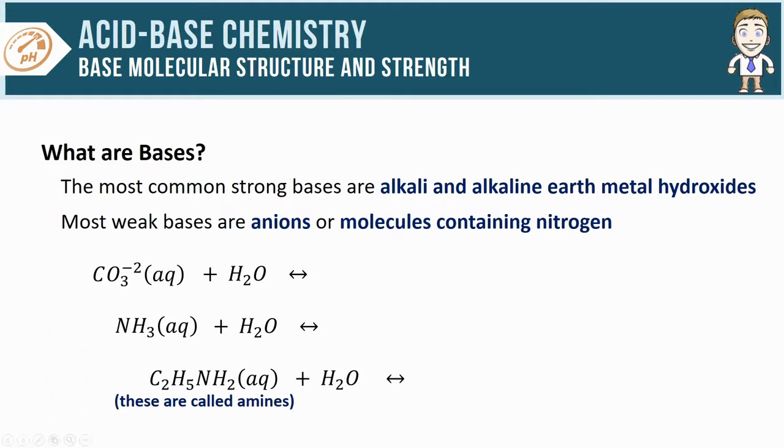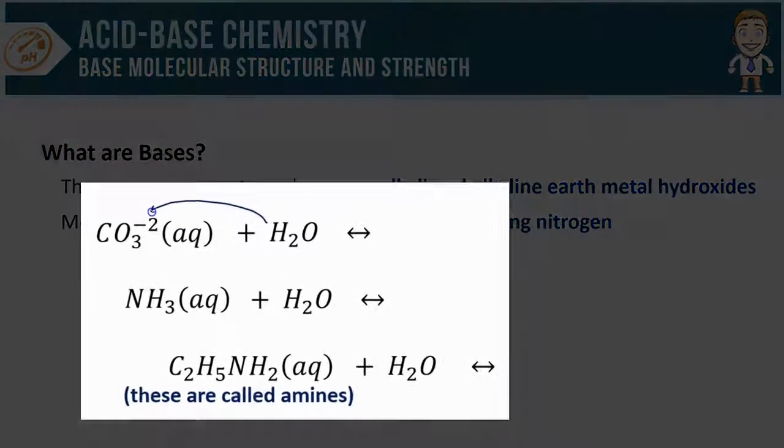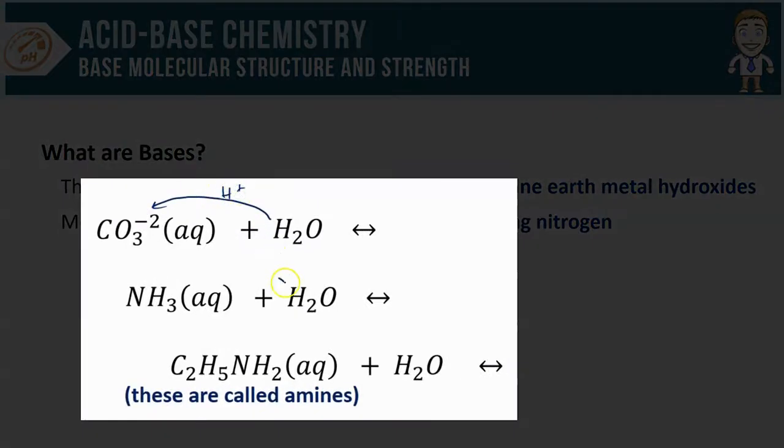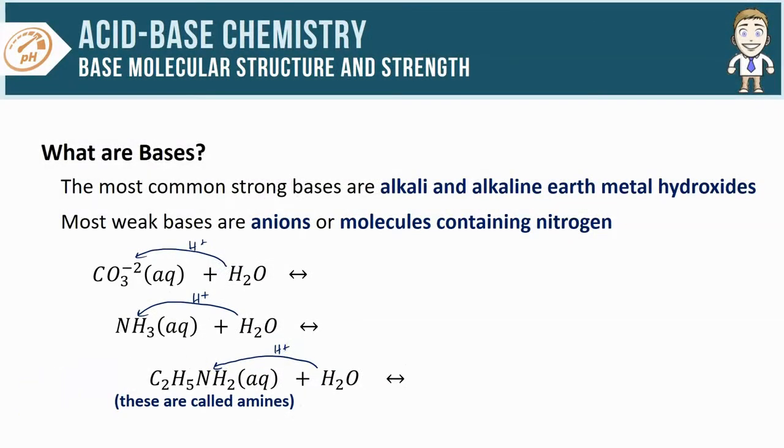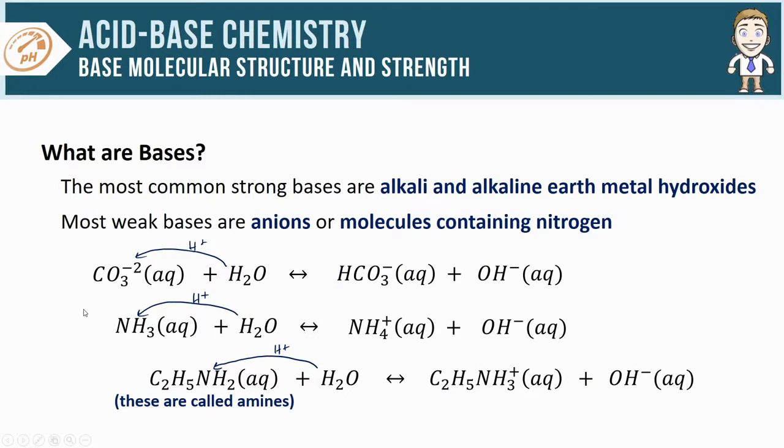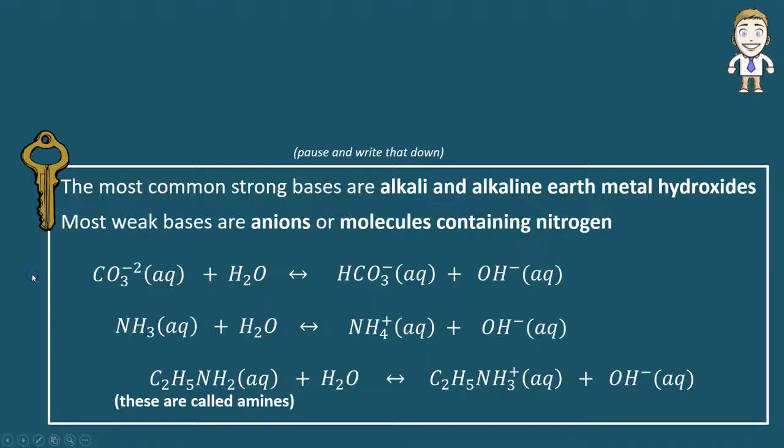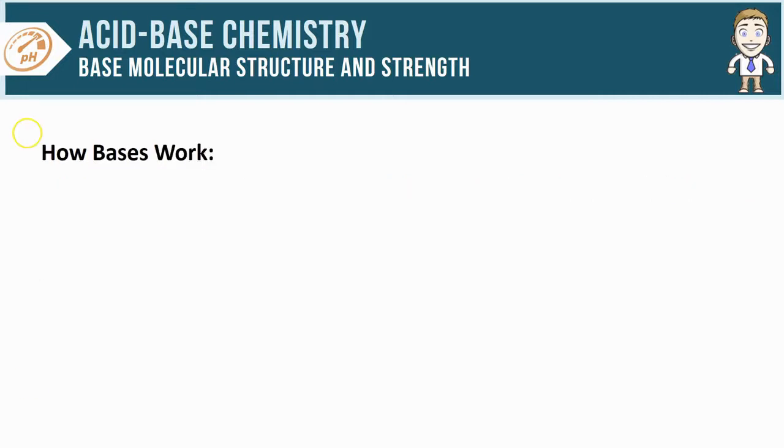For the carbonate ion, it's going to look like this. For ammonia, the hydrogen attaches to the nitrogen, and anytime you have an amine, the hydrogen attaches to the nitrogen in the molecule. This gives me the products of each reaction. Notice in each example we are producing hydroxide ions that make this solution basic, as well as a different conjugate acid. These descriptions make up some of the key ideas for this video, so make sure to pause and take some time to write those down.